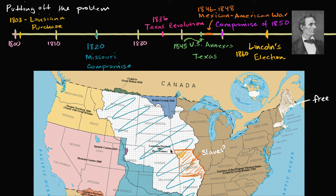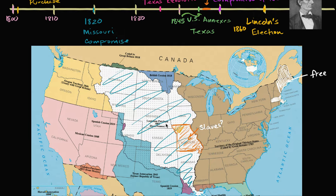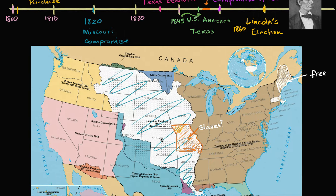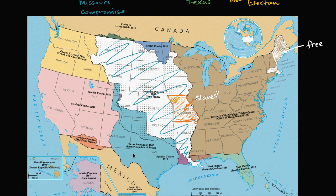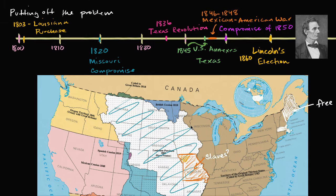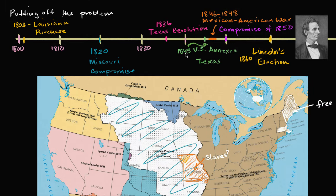In 1836, the expansion is catalyzed further by the Texas Revolution. Texas gets its independence from Mexico, which itself had gotten independence only a few decades before from Spain. So Texas, for a brief time, is its own independent country, but then it's annexed by the U.S. in 1845. So it's more territory for the U.S., and that was slave territory.